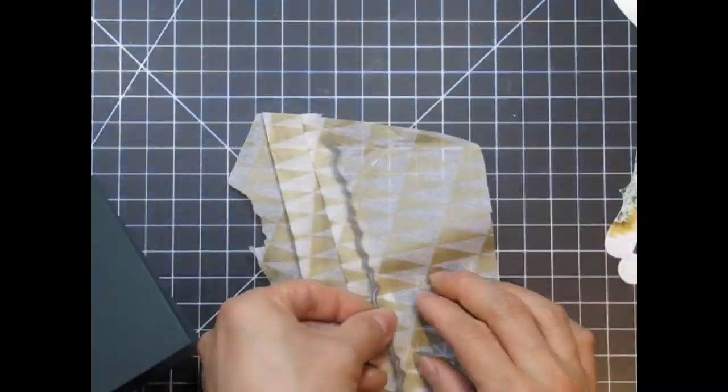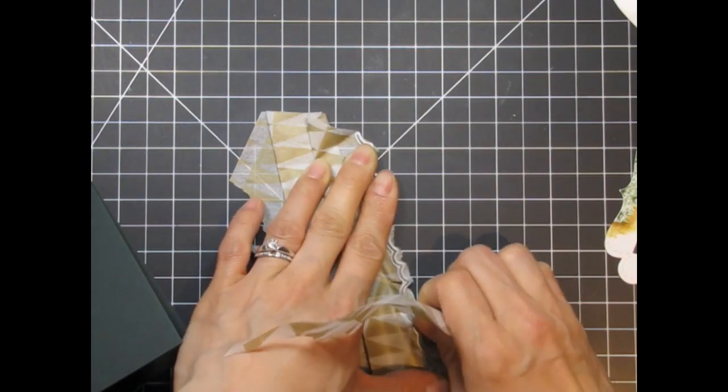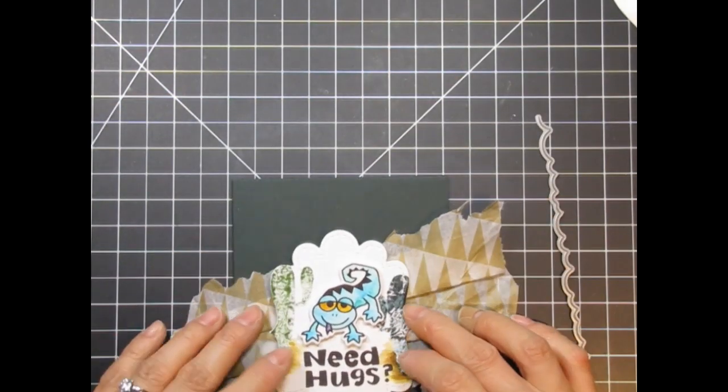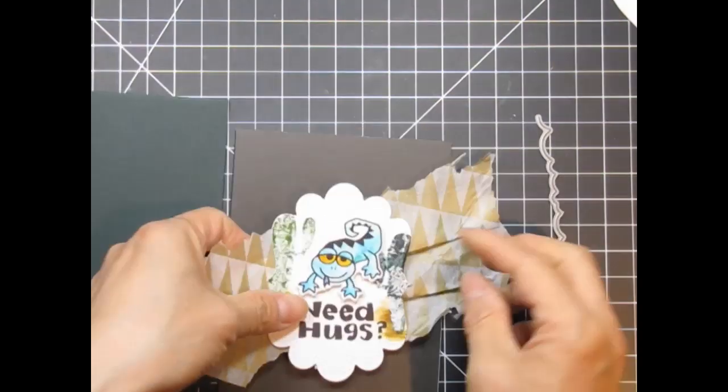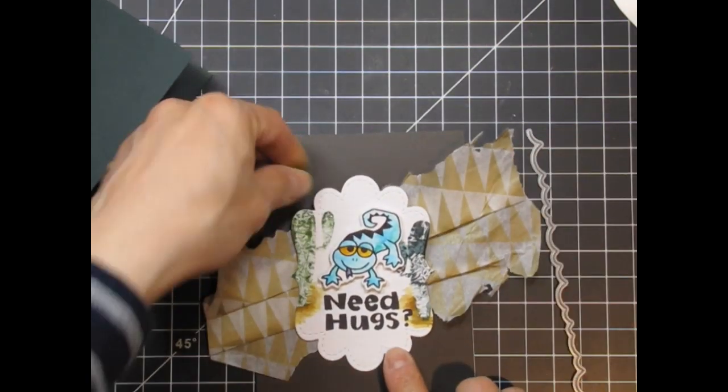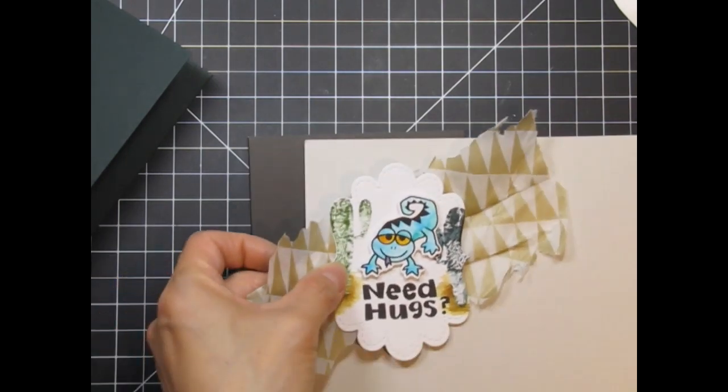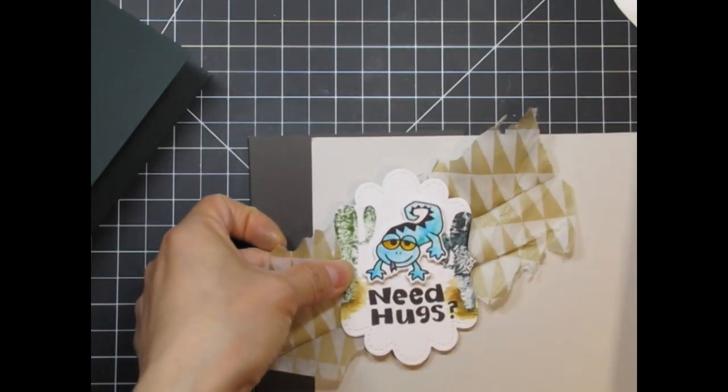I trim off the excess while holding it against the card base, so I know how much I need to reserve before tearing off the other side. This is where I decide that there's too much green and switch to a charcoal card base. This seemed too dark, so I tried three different grey bases before settling on the lightest one.